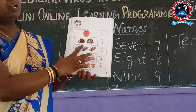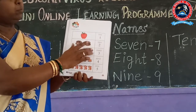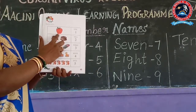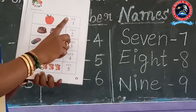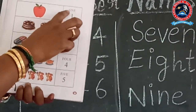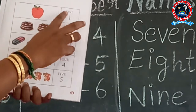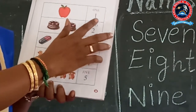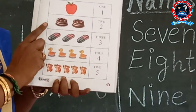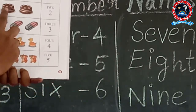I am going to count the objects and you are going to count along with me. How many are there? 1. Now I am going to say the number name: O-N-E, 1. Repeat with me: O-N-E, 1.